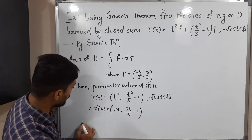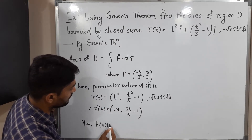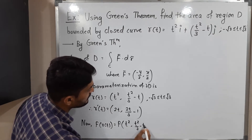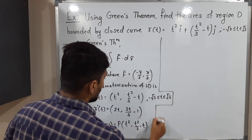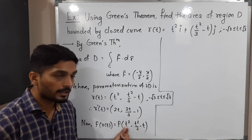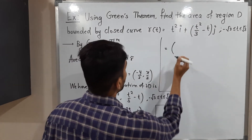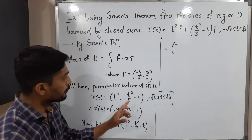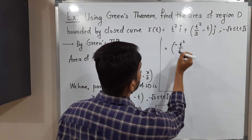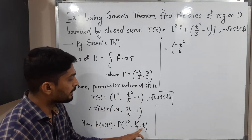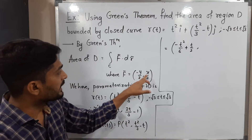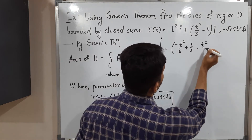Now I will calculate f(R(t)). We substitute R(t) = (t², t²/3 - t) into f. Since f = (-y/2, x/2), here x = t² and y = t²/3 - t. Following the definition: the first component is -(t²/3 - t)/2 = -t²/6 + t/2, and the second component is x/2 = t²/2. So f(R(t)) = (-t²/6 + t/2, t²/2).